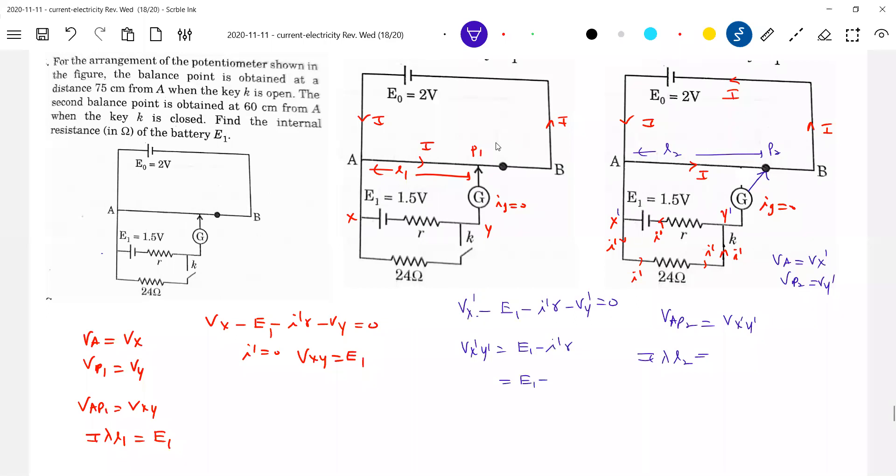What is I dash? I dash should be E1 by, I'll call this is capital R. E1 by R plus r, here only, this loop. Okay, this value you'll substitute here, E1 by R plus r by R. Even you're going to bring outside, so this will be R by...